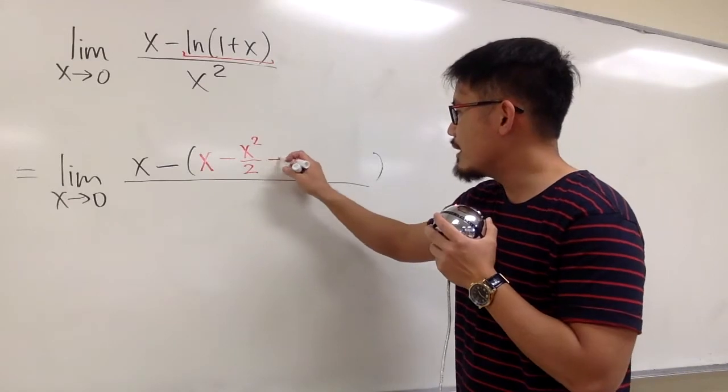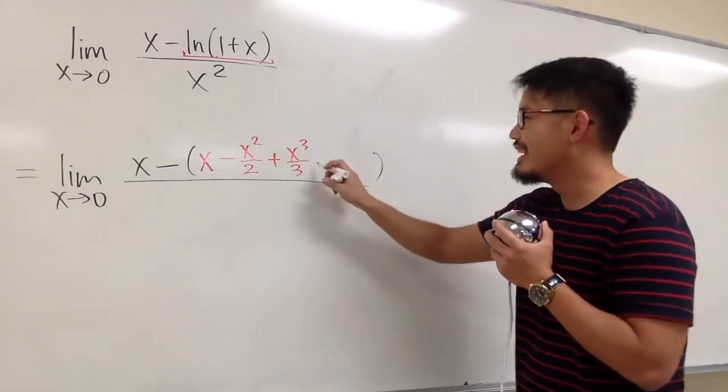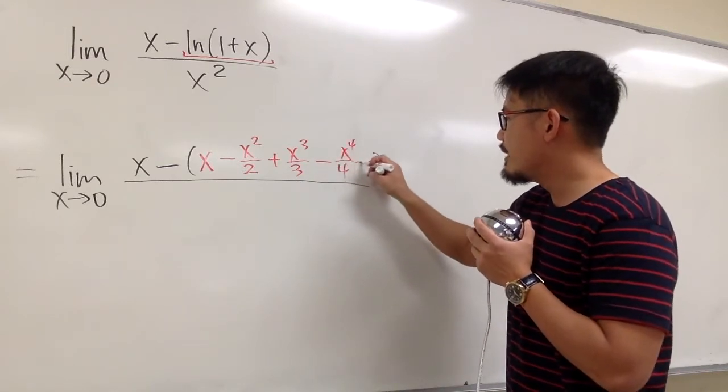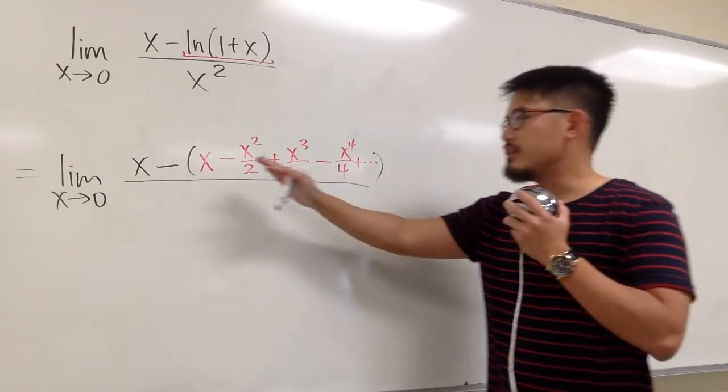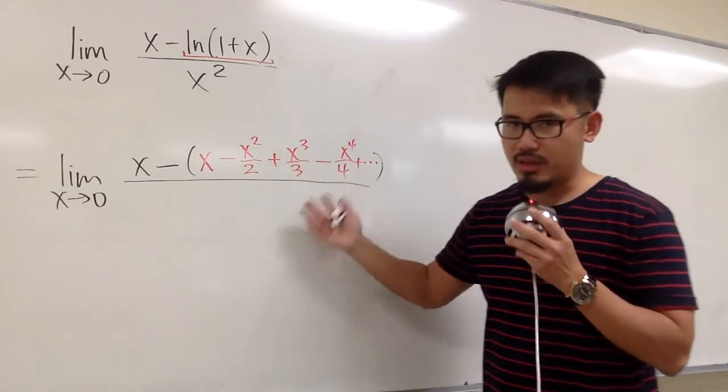Anyways, the next one is plus x³/3, no factorial. It's alternating, so minus x⁴/4, and so on. I put down the plus dot dot dot. Technically I'm not sure how many terms I need, but let me just put down a few of them. Four should be enough.